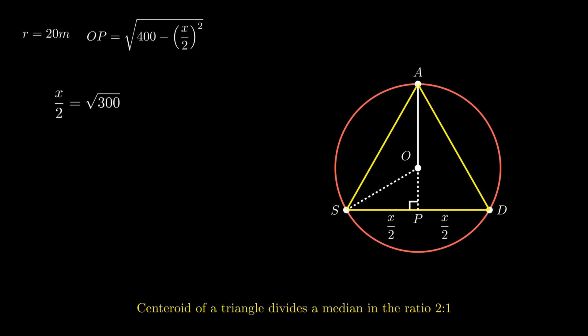As root of 300 equals 10 root 3, therefore X/2 equals 10 root 3. Solving for X, we get X equals 20 root 3. Therefore, the distance between the boys is 20√3 meters.